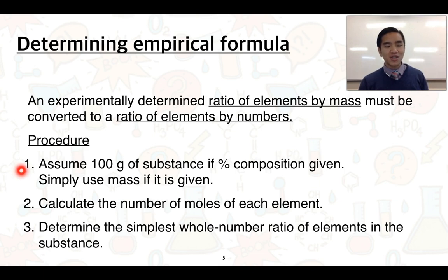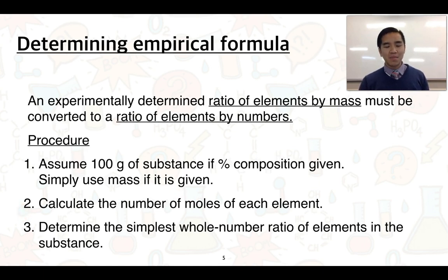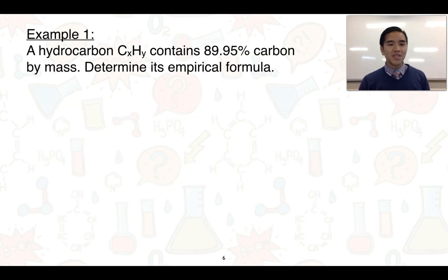Step one is to firstly assume that we've got 100 grams if a percentage composition is given. This makes it easy for us to convert those percentages directly into a quantity, because a percentage means out of 100. If you do get given the masses, then simply use those masses and move to the next step. Step two, we calculate the number of moles of each element. Once we've done that, we compare those moles to determine the simplest whole number ratio — that's our empirical formula.